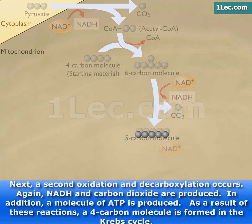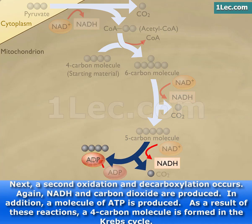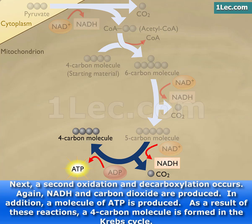Next, a second oxidation and decarboxylation occurs. Again, NADH and carbon dioxide are produced. In addition, a molecule of ATP is produced. As a result of these reactions, a four-carbon molecule is formed in the Krebs cycle.